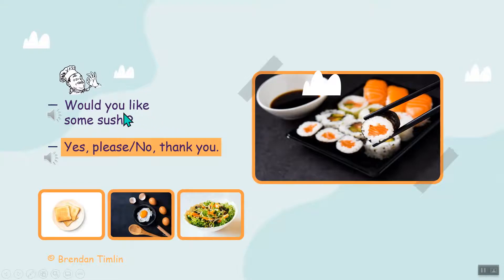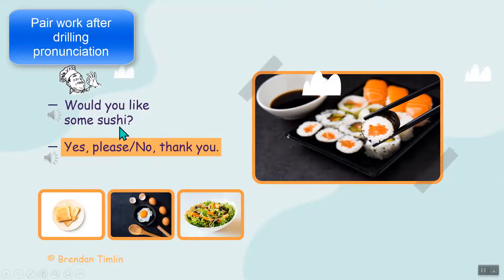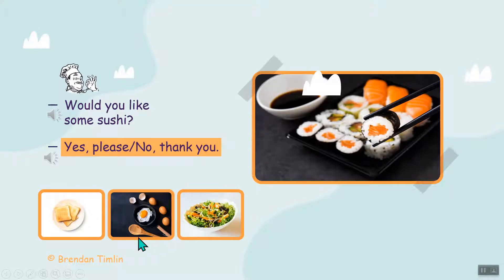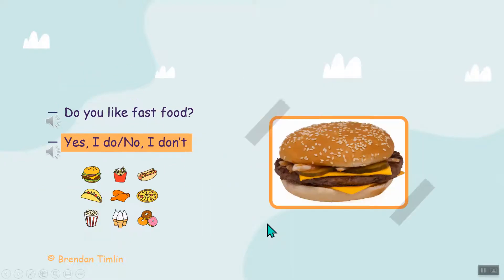Now we have our four questions. Drill 'Would you like some sushi?' a lot — quicker and quicker — and practice 'Yes please' or 'No thank you.' Then try it with these: 'Would you like some toast? Would you like some eggs? Would you like some salad?' Get them to say it really quickly, and in pairs for pair work.